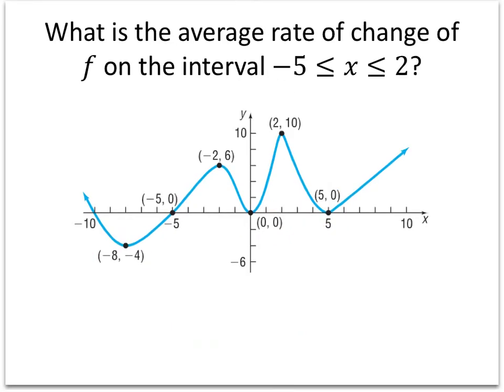One more question. This one asks about the average rate of change. So what we want to know is what's the average rate of change from this point, negative 5 comma 0, to this point, 2 comma 10. From x equals negative 5 to x equals 2, what's the average rate of change? Well, remember our formula for average rate of change. It's f of b minus f of a divided by b minus a.